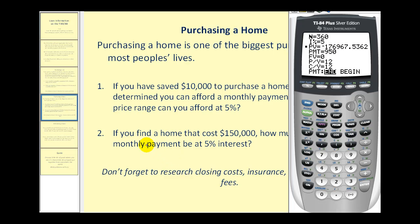The second question states: if we could find a home that costs $150,000 instead of maxing out our loan amount, how much would this save us per month? What we can do now is change the present value of the loan — it actually wouldn't be $150,000, it would be $140,000 because we have $10,000 for the down payment. So we'll enter in a present value of negative $140,000. We go down to our payment, clear this, press alpha enter. Instead of paying $950 per month, we would be paying just over $750 per month — a large drop in the monthly payment.